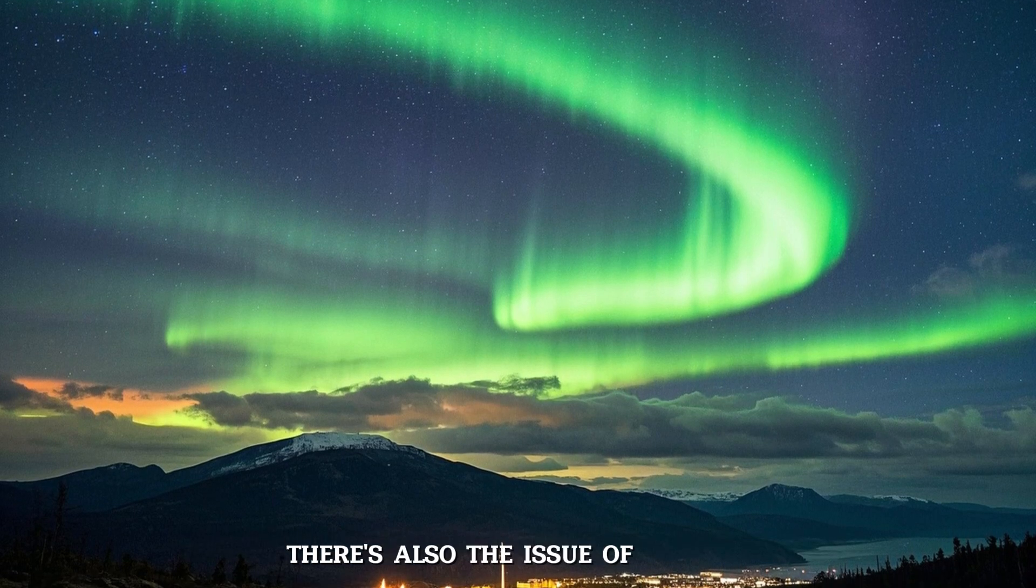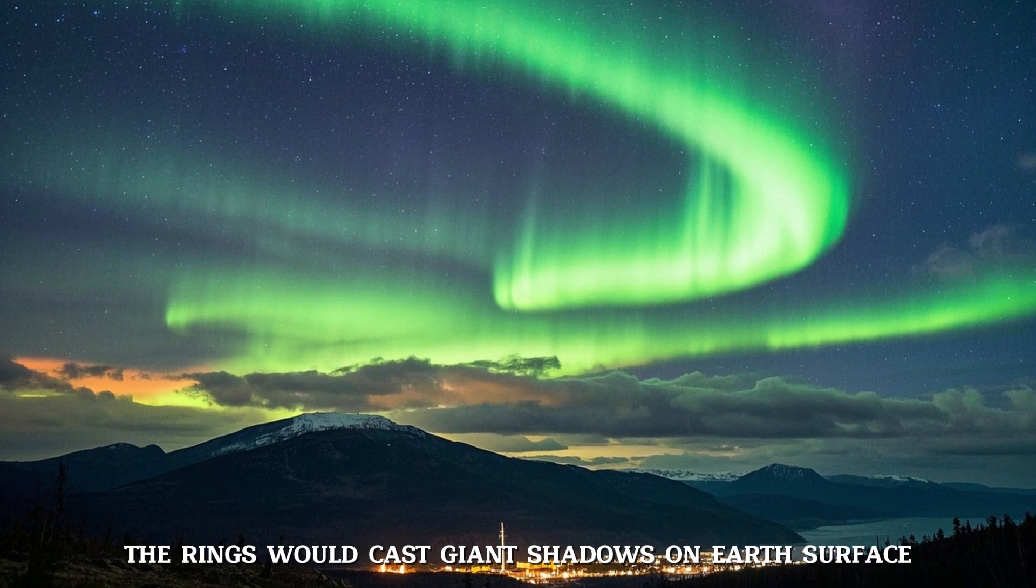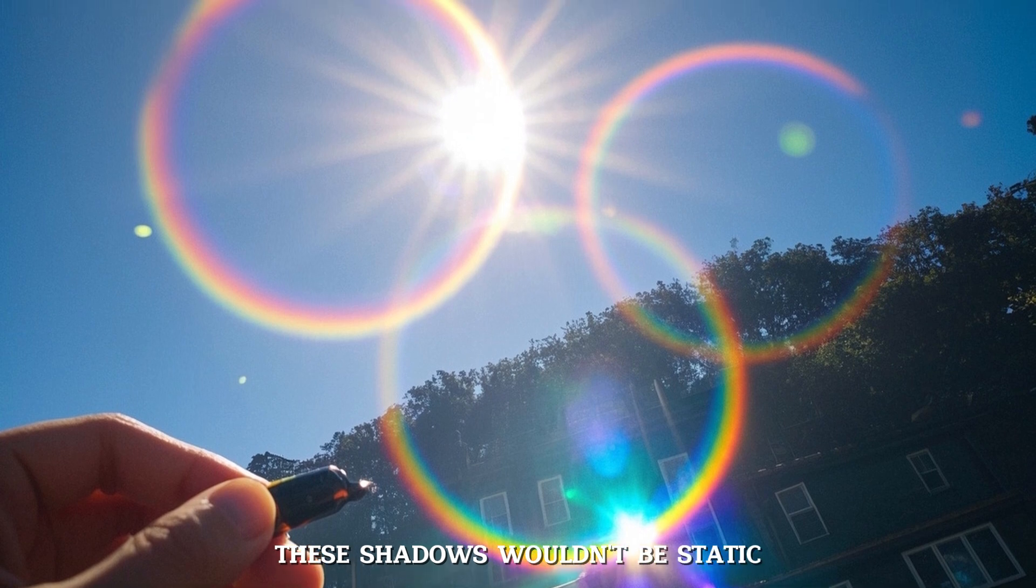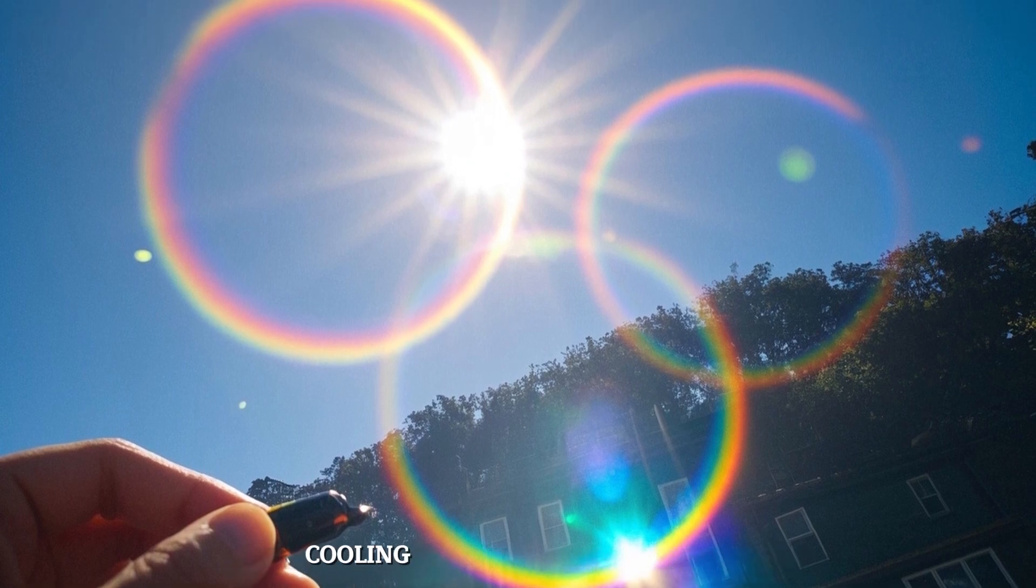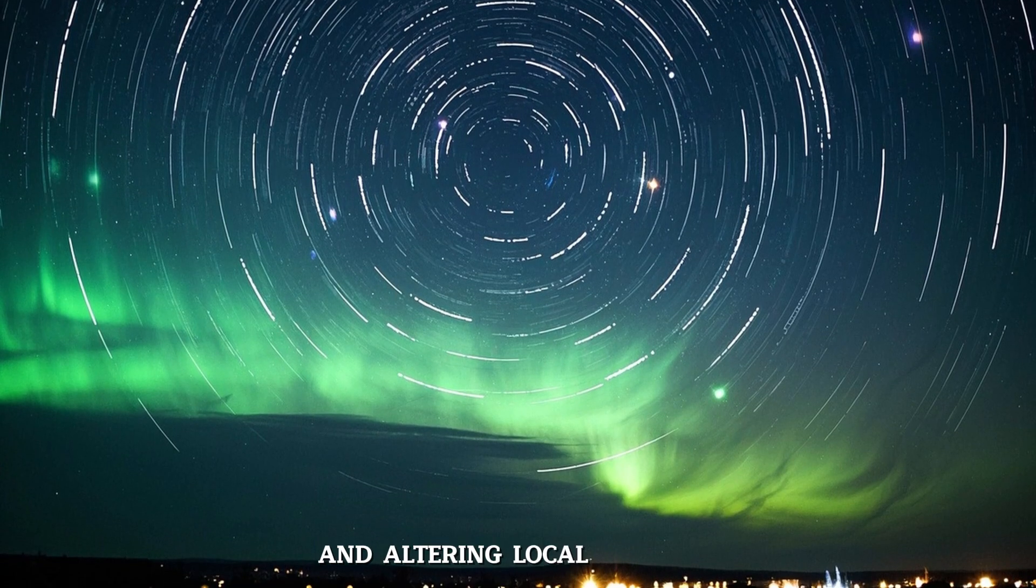There's also the issue of climate. The rings would cast giant shadows on Earth's surface. These shadows wouldn't be static. They'd move with the seasons and orbit, cooling regions beneath them, and altering local climates.